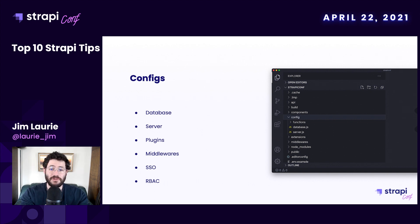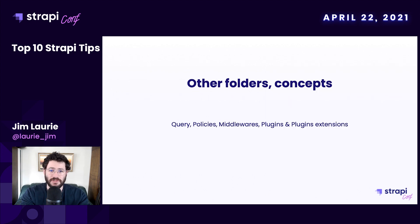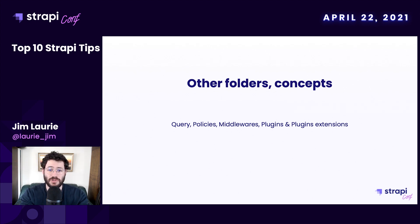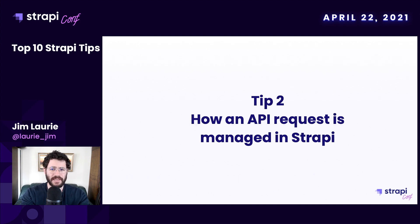You can find other folders and concepts that exist in Strapi: policies, which are functions that can be applied before controller actions; middlewares, to interact with the Node.js middleware stack; and plugins, which we will talk about later. All of these can be customized thanks to the customization concept.